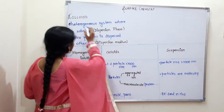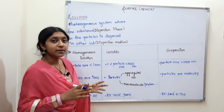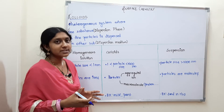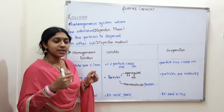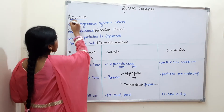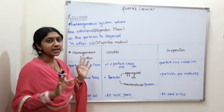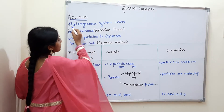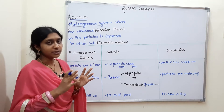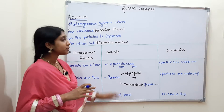Let's see colloids. Colloids are a heterogeneous system where one substance is dispersed over another. Heterogeneous means two different types of molecules — this is heterogeneous. Homogeneous is uniform composition; heterogeneous is a different type of composition.